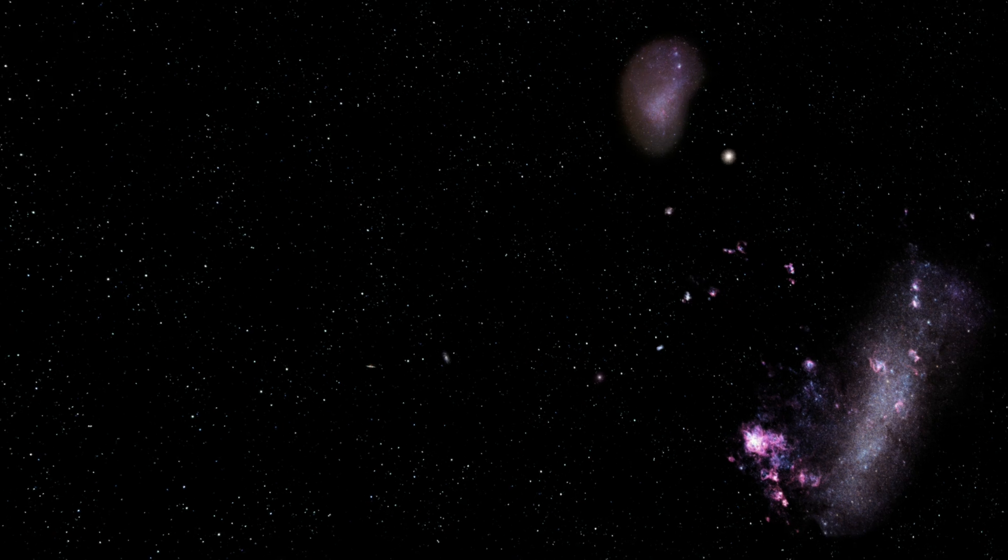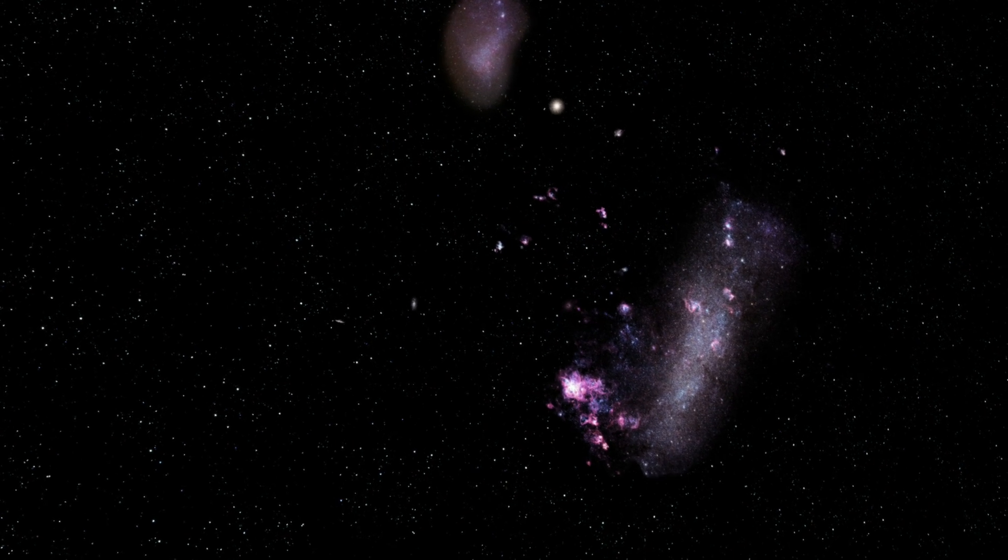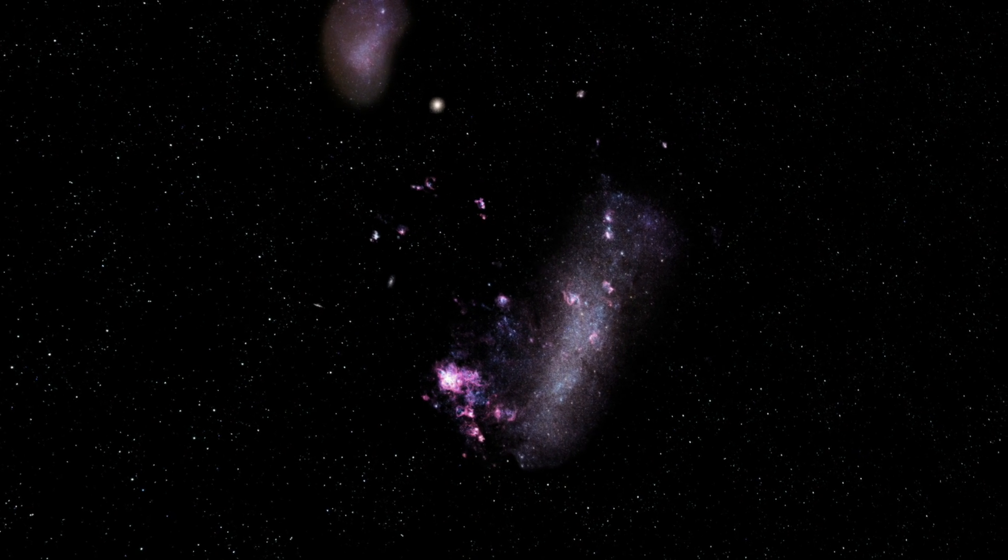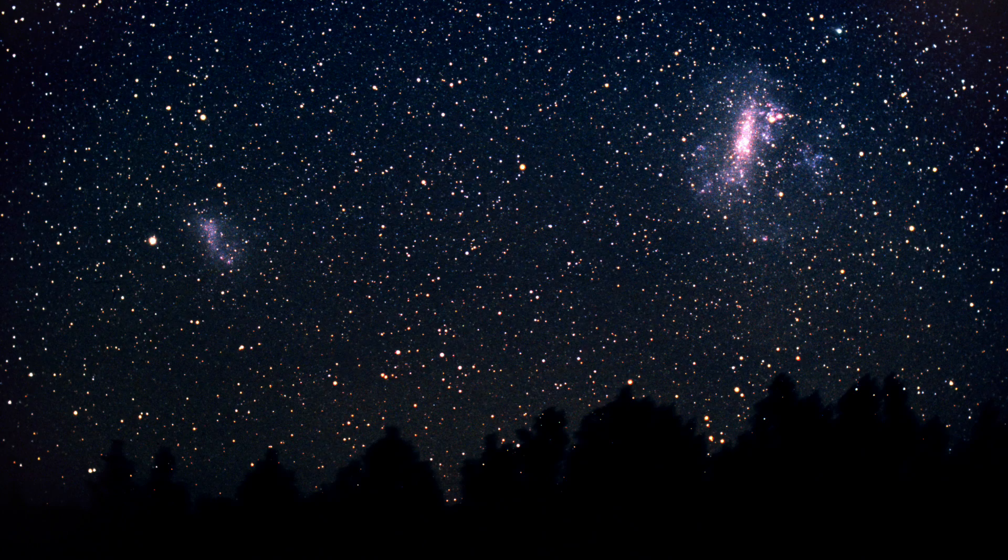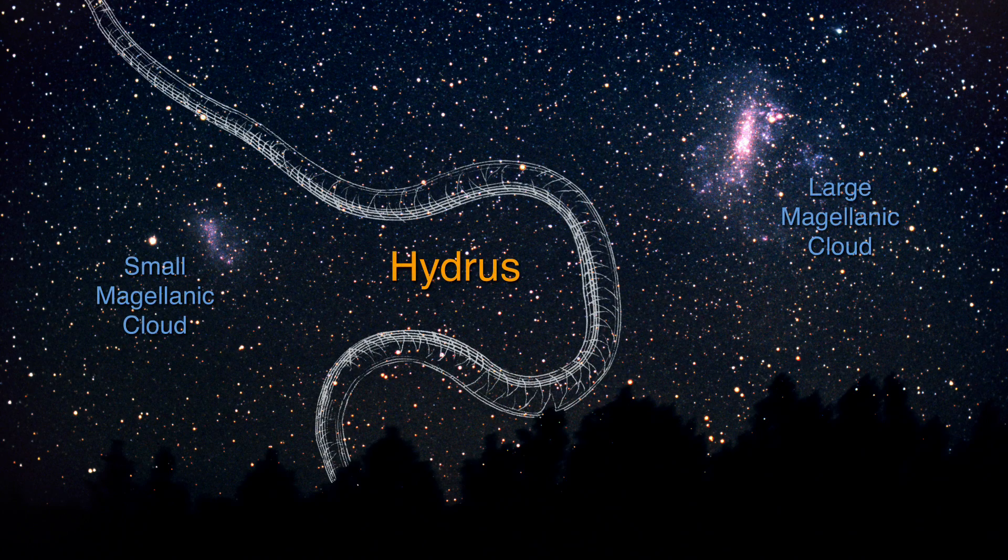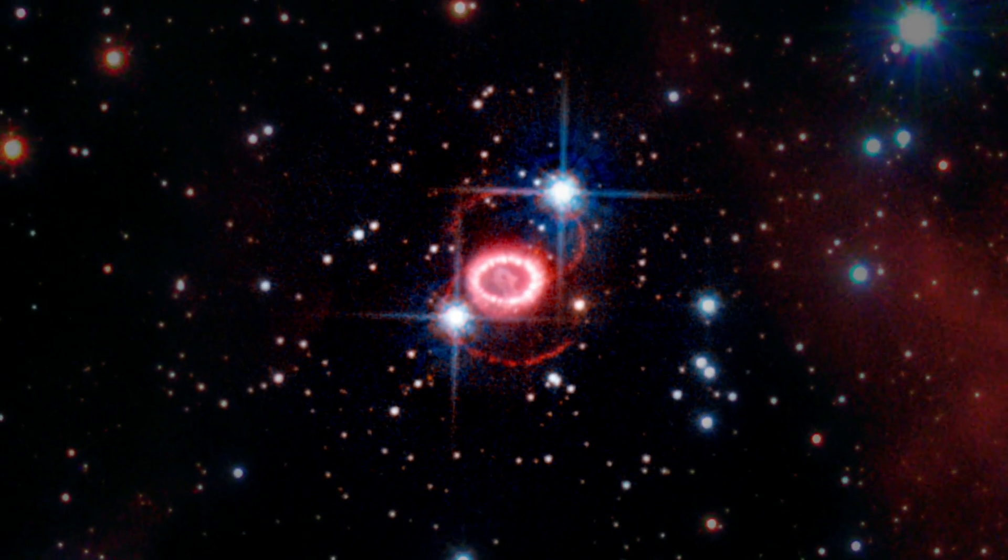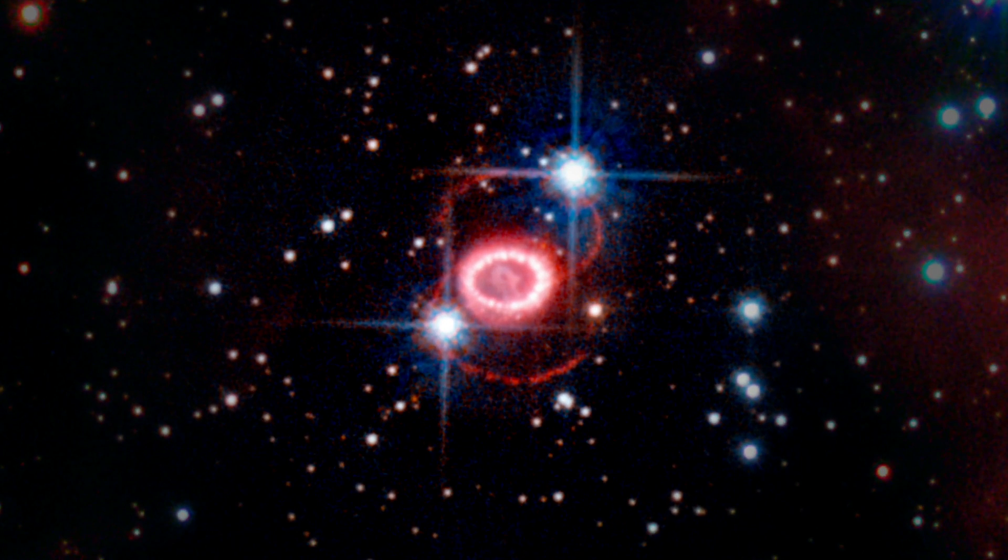Supernova 1987A is not quite in our galaxy. It's in our neighbor, the satellite, the Large Magellanic Cloud. Scientists have been watching the supernova for three decades, first from the ground, then with Hubble after its launch in 1990.